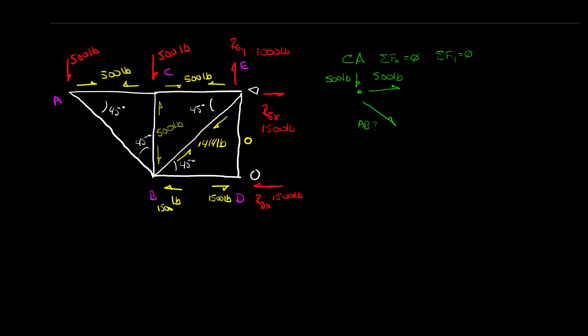I've drawn AB as an arrow going down, but looking at the vector components — you'd have to go over to the right and then down — and checking that forces must sum to zero in X and Y, I can see this vector is backwards. I'll fix that now: the vector needs to go up and to the left, with components going over and up to make that vector. We'll call these two components ABY and ABX.